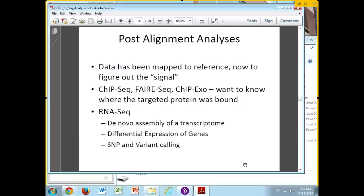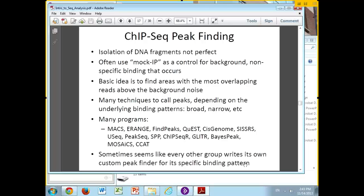For ChIP-Seq, the analysis is basically very much the same for FAIRE-Seq or ChIP-exo. You're basically trying to figure out where the target protein is actually bound within the genome. For RNA-Seq, you might want to do a de novo assembly of the transcriptome, see differential expression of genes, and variant calling.